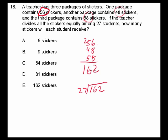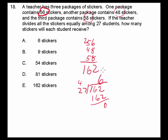I'm going to divide that by 27 students. If you use a calculator, you'll see that that's 6. If you don't use a calculator, you'll come to that answer anyway. 6 times 7 is 42, 6 times 2 is 12, plus 4 is 16 with a remainder of 0. So the answer is 6.